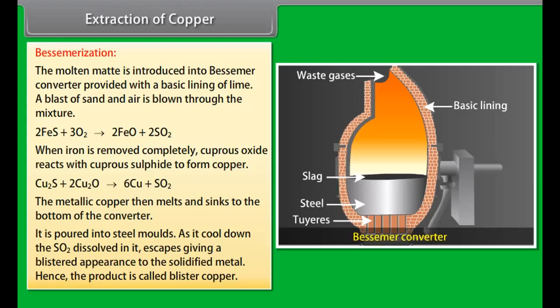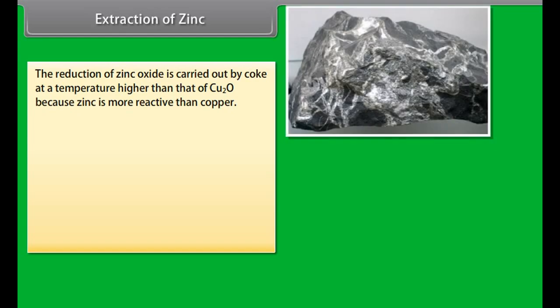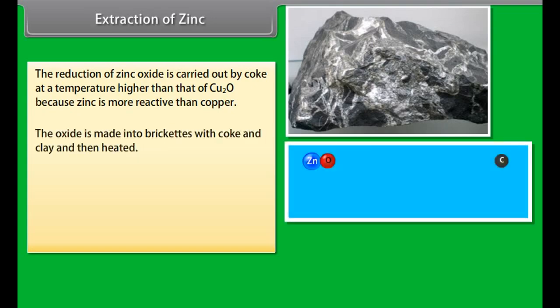Smelting: Roasted ore is mixed with a little coke and sand and heated with excess of air in a water-jacketed blast furnace. Most of the remaining iron sulfide is converted into oxide which reacts with silica forming fusible slag of iron silicate. The slag floats over a molten layer consisting chiefly of Cu2S and a little FeS called mate.